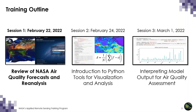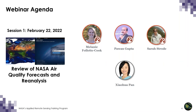Here's an outline of our webinar series agenda. Today we'll review the different NASA forecasts and reanalysis products relevant for air quality, and demonstrate GES DISC tools for visualization and analysis of MERRA-2 reanalysis products. In sessions two and three, we'll use Jupyter Notebooks to interpret model output for air quality assessment. You'll be hearing from my colleagues Dr. Pawan Gupta and Dr. Sarah Strode in sessions two and three.